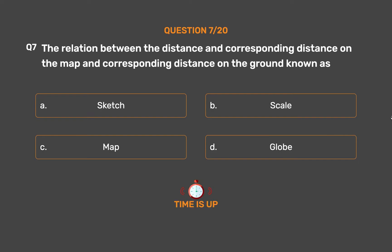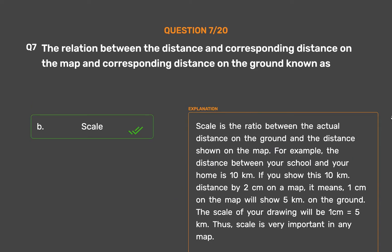The correct answer is Option B: Scale. Scale is the ratio between the actual distance on the ground and the distance shown on the map. For example, if the distance between your school and your home is 10 kilometers, and you show this as 2 centimeters on a map, then 1 centimeter on the map shows 5 kilometers on the ground. Scale is very important in any map.